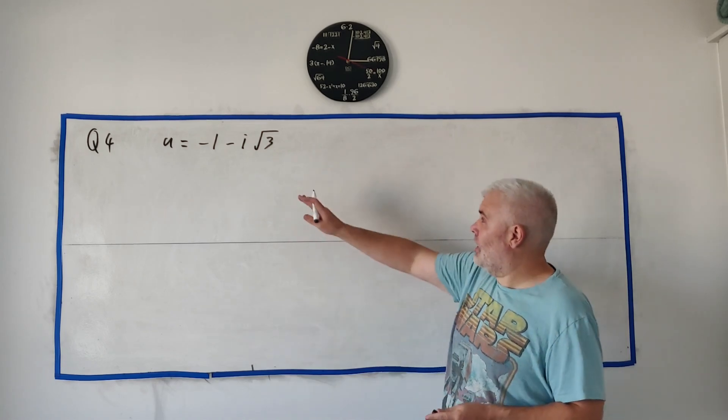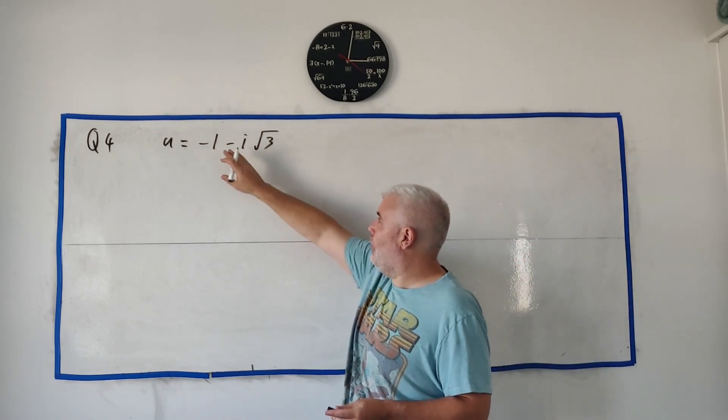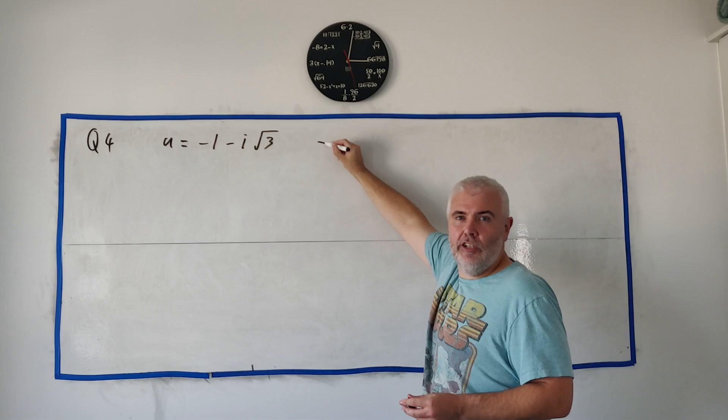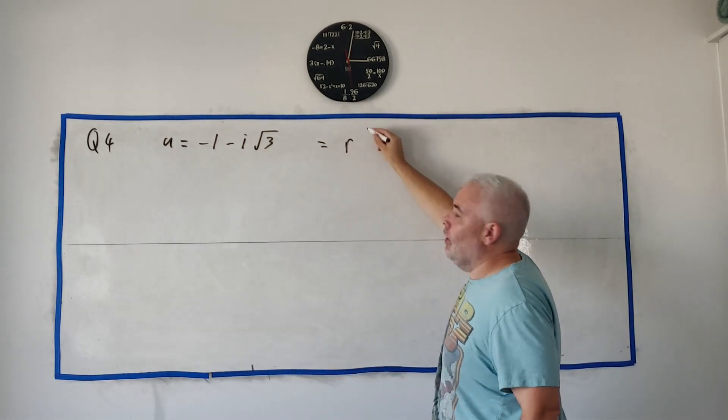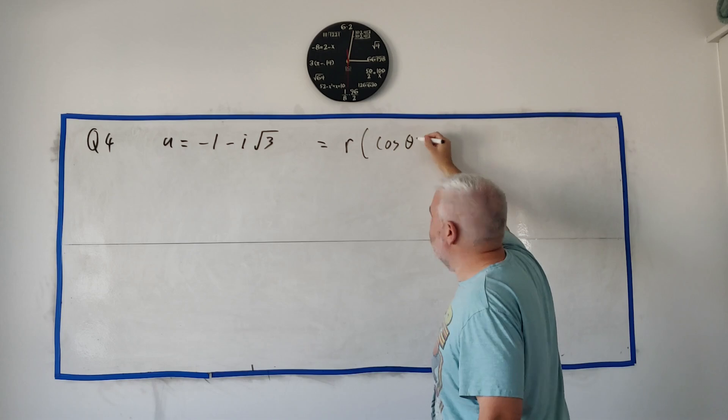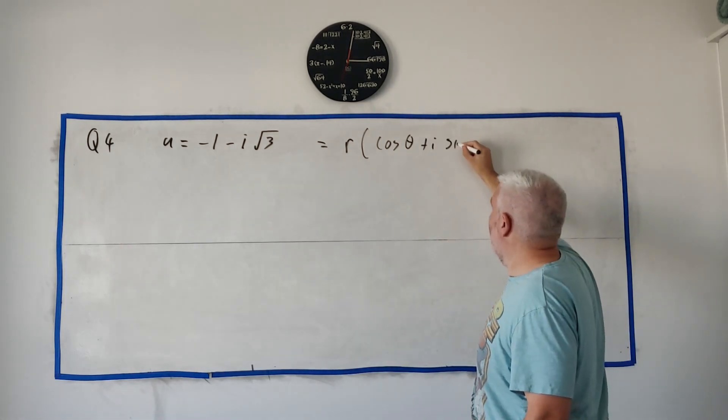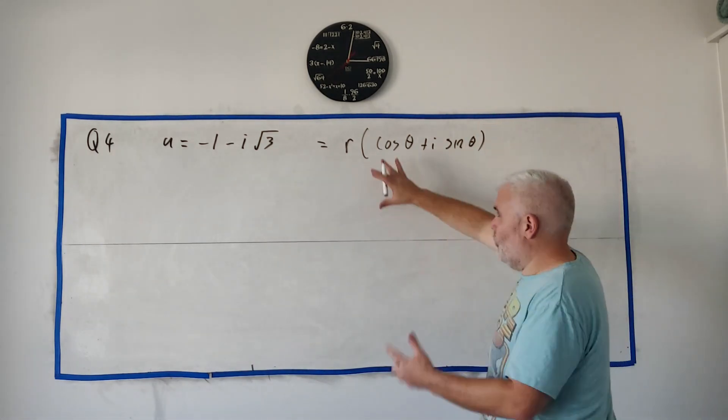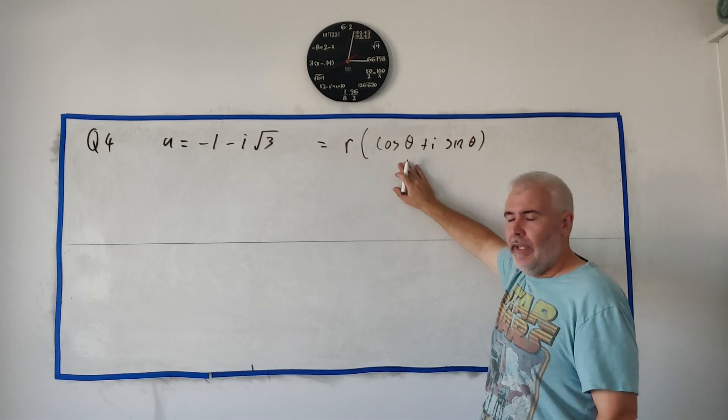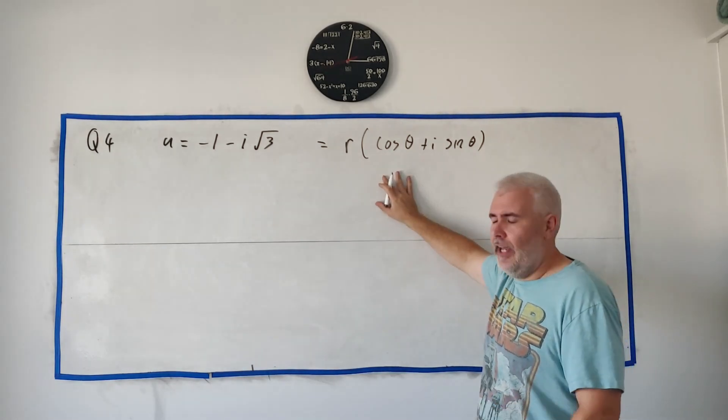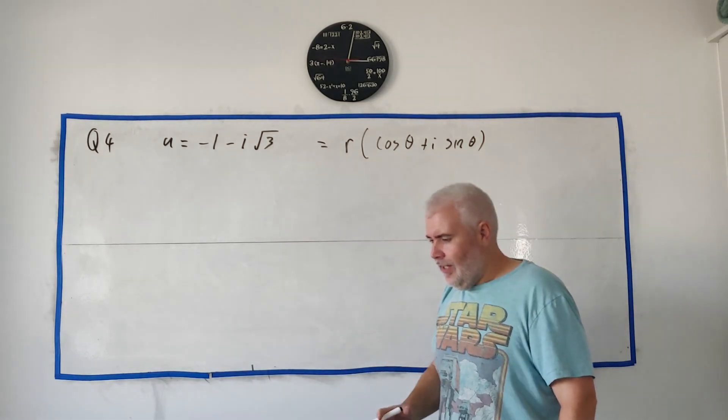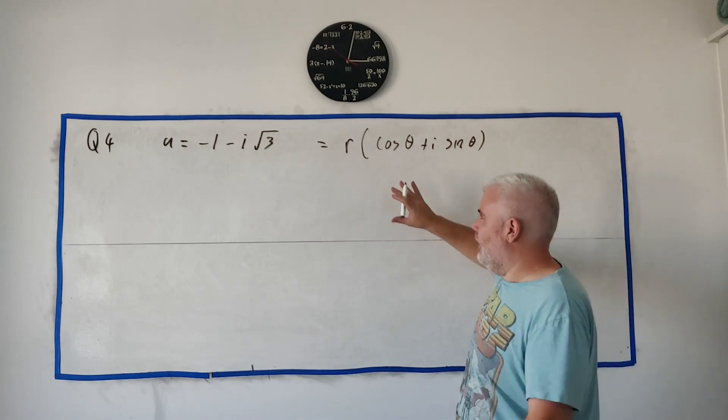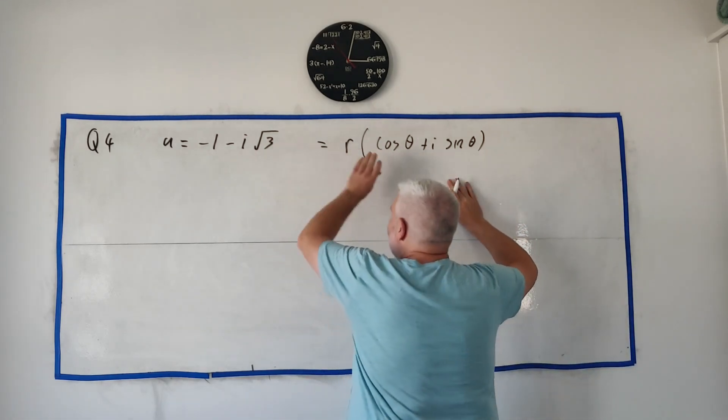In question 4, we're given a complex number u. It's minus 1 minus square root 3 times i. And we're asked to express this not in this form, but to make it look like r multiplied by cosine some angle theta plus i sine some angle. So this is a quite common thing to do, this is called polar form. It's really good at visualizing the functions or it's especially good when things are moving in circular motion.